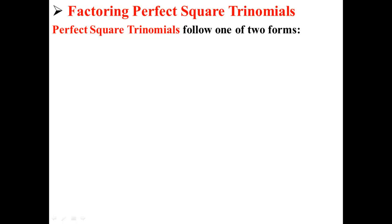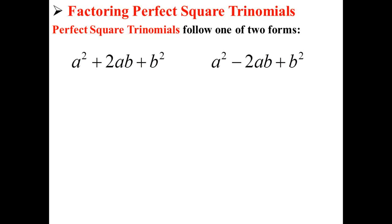Let's learn about factoring perfect square trinomials. Perfect square trinomials follow one of two forms: either a squared plus 2ab plus b squared, or a squared minus 2ab plus b squared. These can be factored to the forms a plus b squared and a minus b squared.